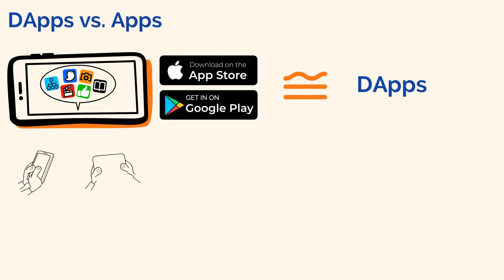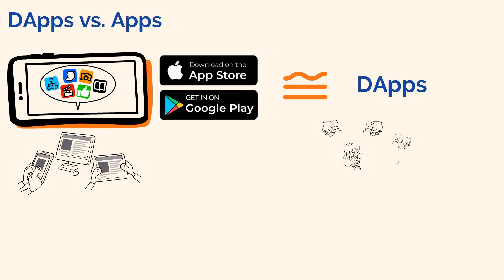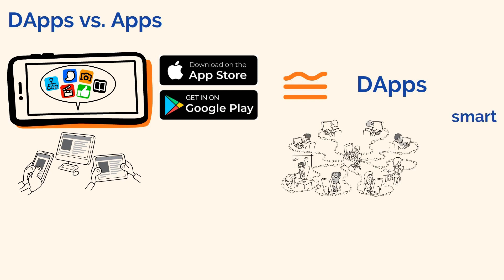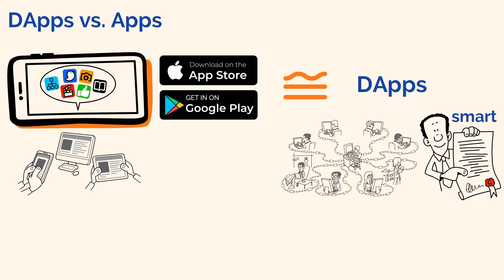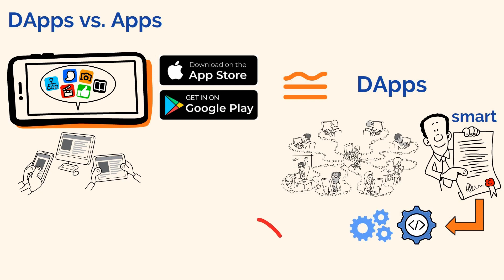So first, unlike traditional apps that are built to run on particular devices, dApps are built to run on a network using smart contracts. These smart contracts are basically pieces of code that allow dApps to run automatically without any intervening third parties.